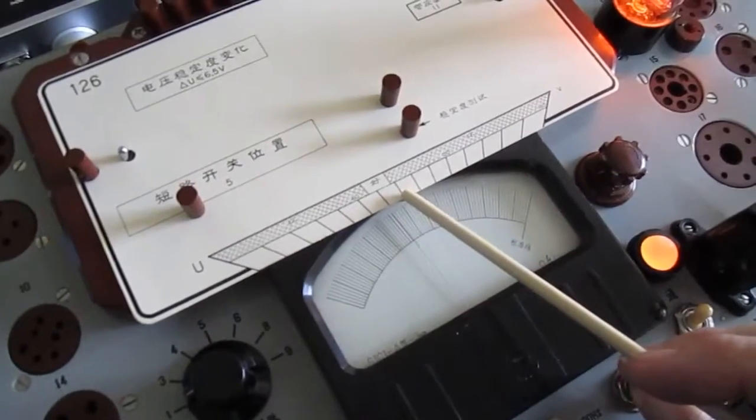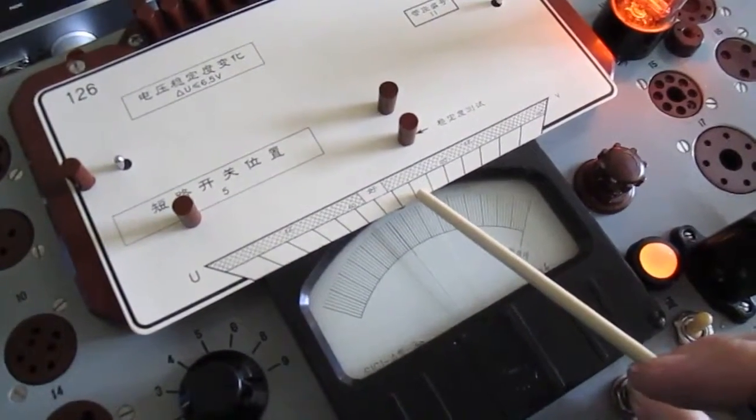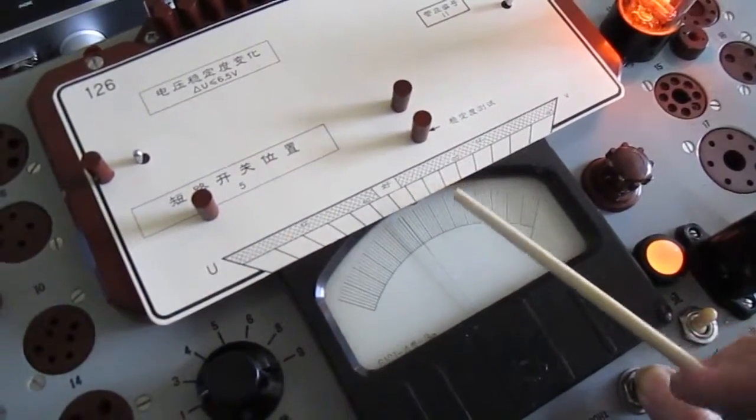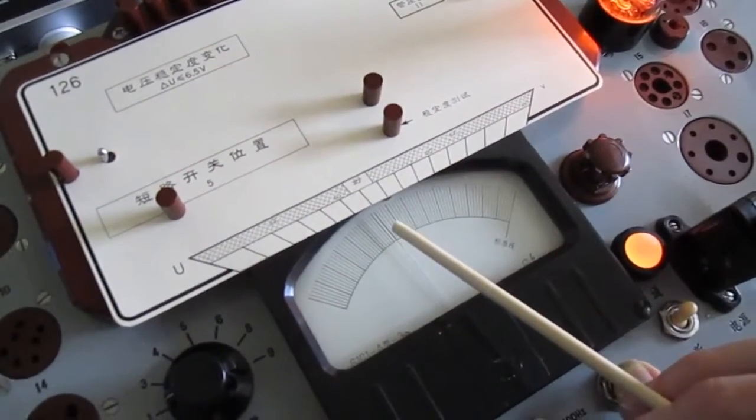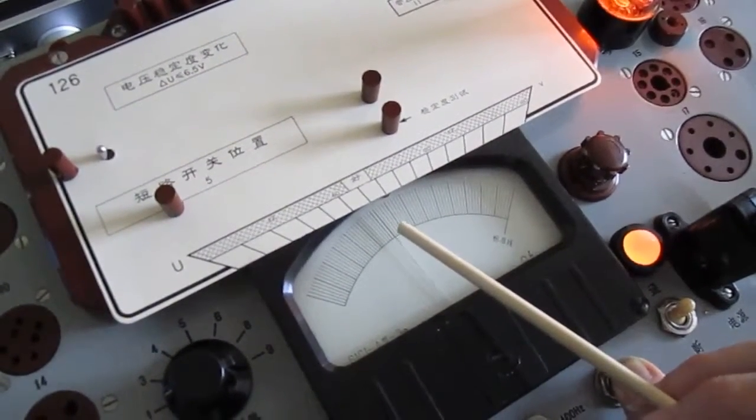So that would be 72, 84, 96, 108, and 120. What it really means is when we're reading our scale down here, each of the minor divisions on the scale is 2.4 volts.